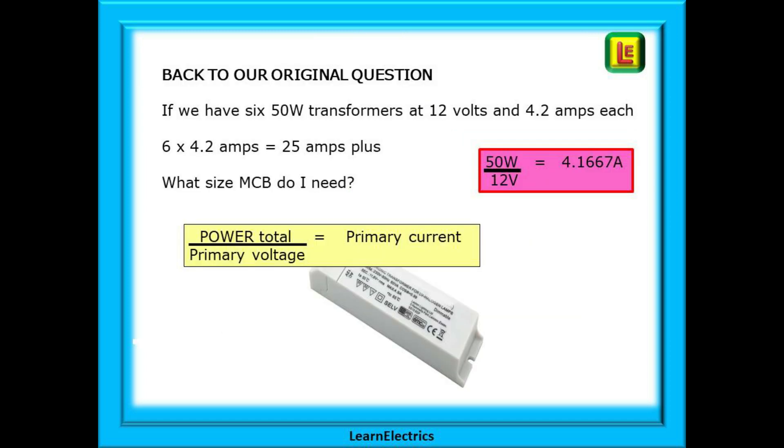Now, we can go back to our original question, the one that we started with. We have six 50-watt luminaires connected to six separate transformers, and each transformer output is 12 volts at 4.2 amps each, giving a total demand of 25 amps. What size MCB do we need on the input side?